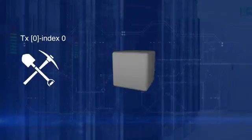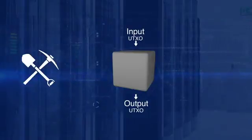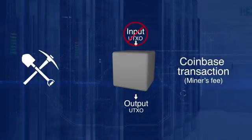Transaction 0, index 0 of the confirmed block, is created by the miner of the block. It has a special UTXO and does not have any input UTXO. It is called the coinbase transaction that generates the miners' fees for the block creation. Currently, the miners' fees is 12.5 BTC for Bitcoin. This is how new coin is minted in Bitcoin.